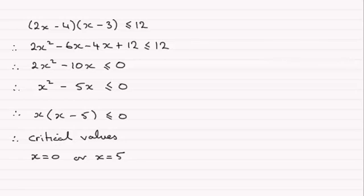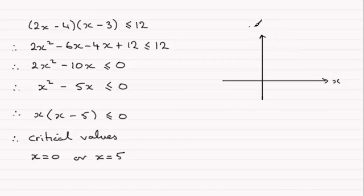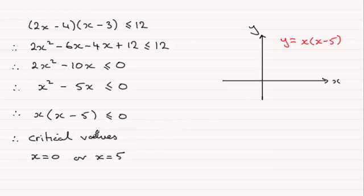What we do with those values is sketch a graph. We sketch the graph of y equals x squared minus 5x, or x times (x minus 5). The critical values are where the curve crosses the x-axis: it crosses at the origin and at x equals 5. It's a positive x squared graph, so it's a parabola going through the origin and up through x equals 5.